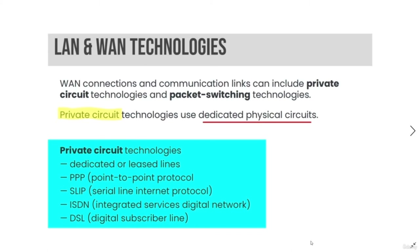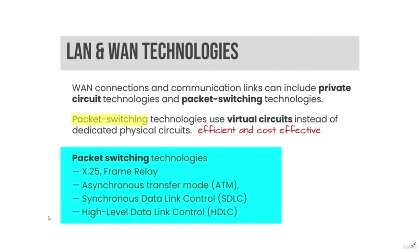Network devices include LAN and WAN technologies. WAN connections can include private circuit technologies and packet switching technologies. Private circuit technologies use dedicated physical circuits, including dedicated or leased lines, PPP (Point-to-Point Protocol), SLIP (Serial Line Internet Protocol), ISDN (Integrated Services Digital Network), and DSL (Digital Subscriber Line). Packet switching technologies use virtual circuits instead of dedicated physical circuits, which is more efficient and cost-effective. These include X.25, Frame Relay, ATM (Asynchronous Transfer Mode), SDLC (Synchronous Data Link Control), and HDLC (High Level Data Link Control).